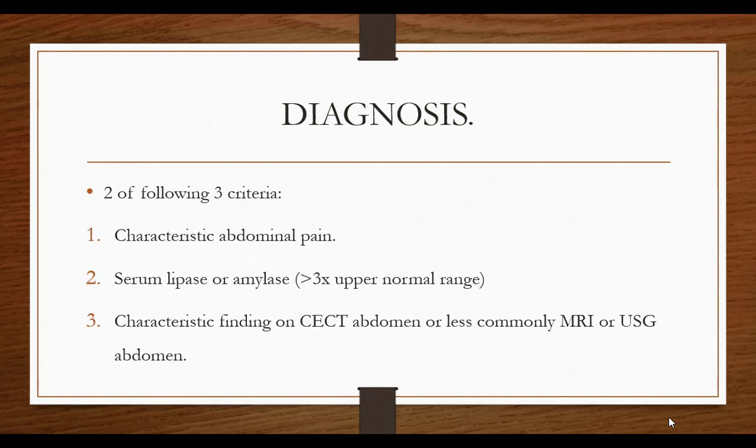How do you diagnose acute pancreatitis? Two of three criteria must be fulfilled: classical abdominal pain radiating to the back, relieved by bending forward; a rise in serum amylase or lipase more than three times the upper limit of normal — that establishes the diagnosis. If we fail to diagnose it but have strong suspicion or cannot rule out other causes like perforation or peritonitis, we can proceed with imaging — contrast CT abdomen, or less commonly MRI or ultrasound.